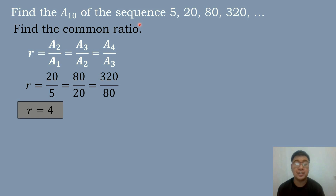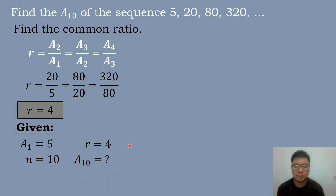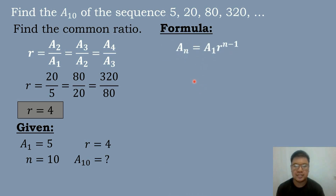Therefore this sequence is an example of a geometric sequence because it has a common ratio. We identify the given: a sub 1 is equal to 5, n is equal to 10, r is equal to 4, and we will find the 10th term of the given geometric sequence.